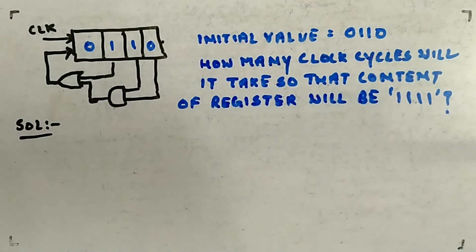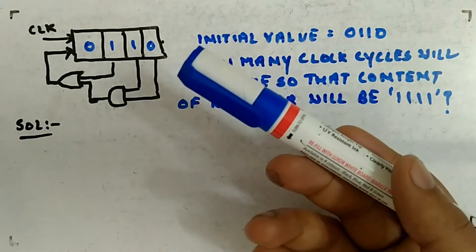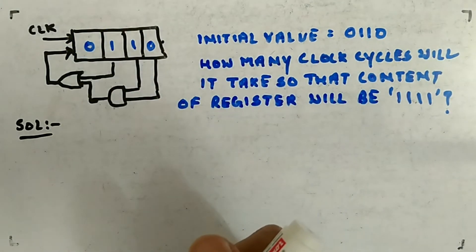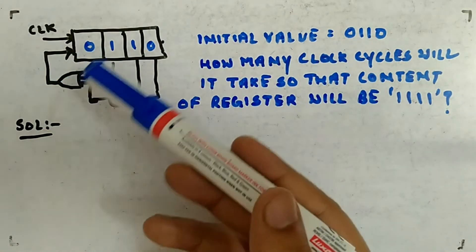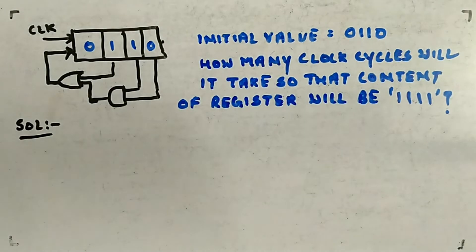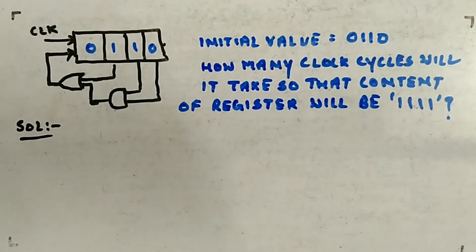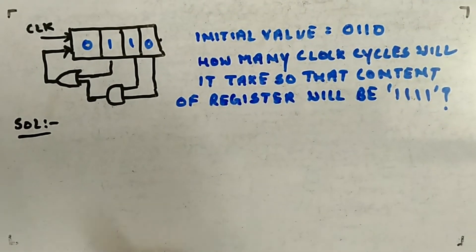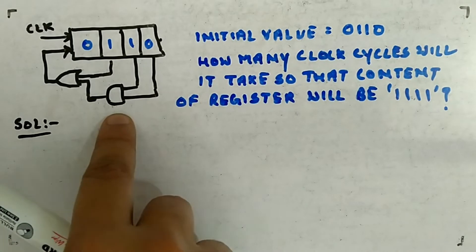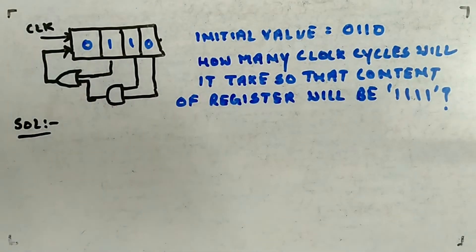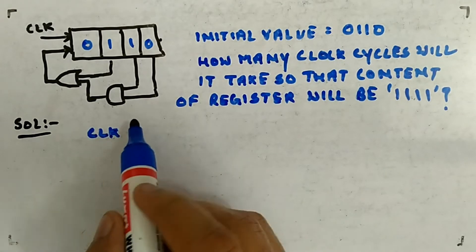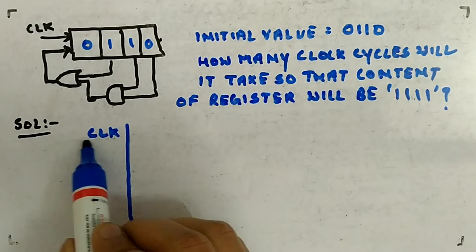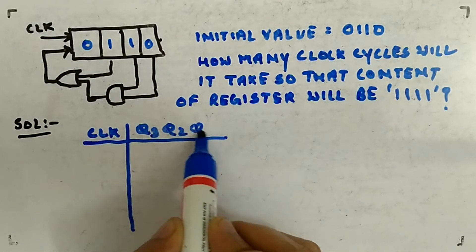Now the question being asked is how many clock cycles will it take so that content of register will be 1111. An easier way to do this is using a table. See, you can take these values, do the ANDing - this is an AND gate - and OR with this guy and feed it to the input. But that creates confusion and there are chances of mistake. Better way is to make a table with the clock pulses and the content of q3, q2, q1, q0.